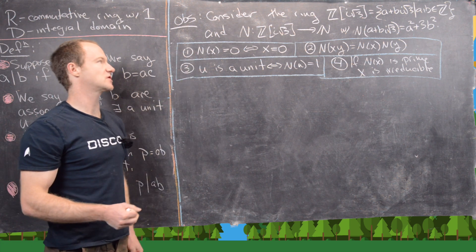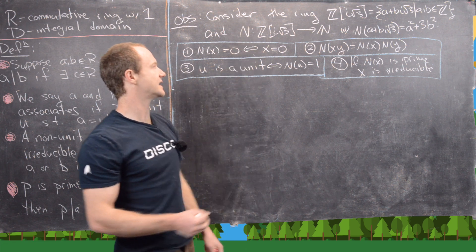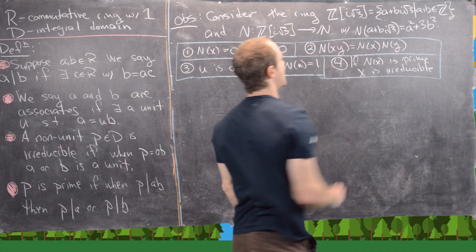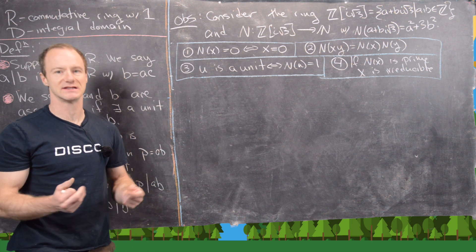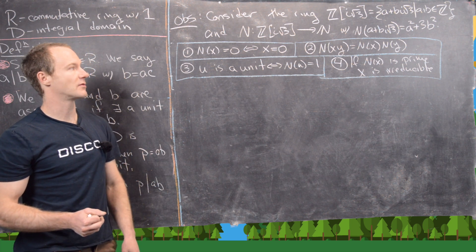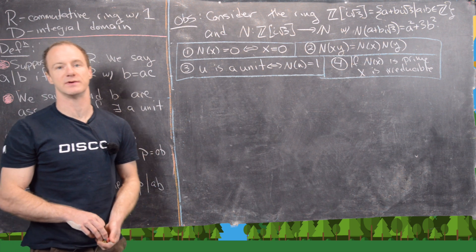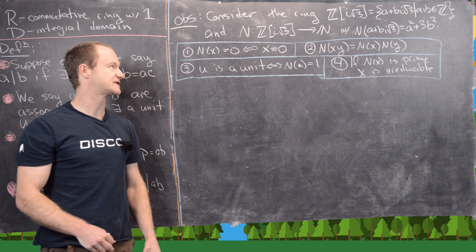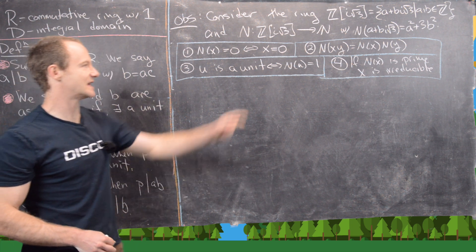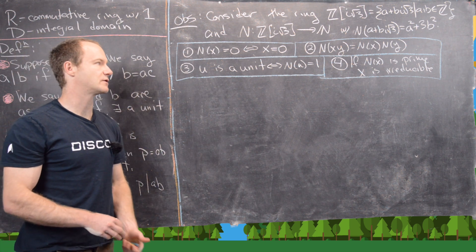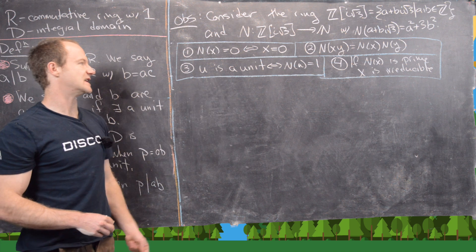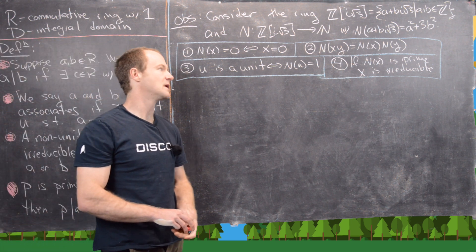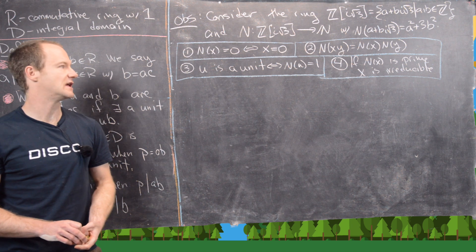We'll use a norm function N going from Z[i√3] to the natural numbers. It takes a complex number and multiplies it by its conjugate, giving N(a + bi√3) = a² + 3b². We have four properties to prove: (1) N(x) = 0 if and only if x = 0; (2) N(xy) = N(x)·N(y); (3) u is a unit if and only if N(u) = 1; and (4) if N(x) is prime, then x is irreducible.